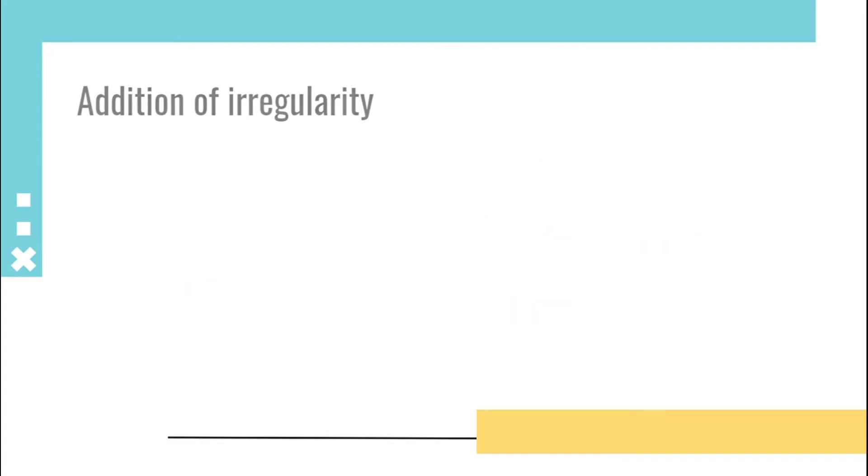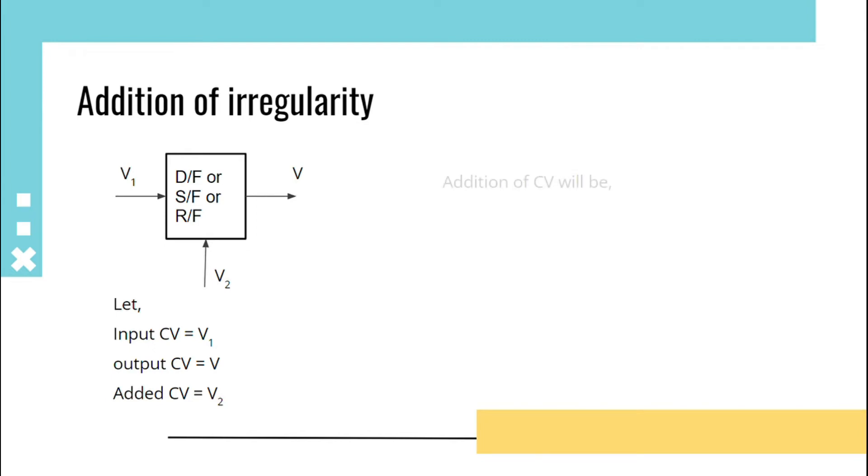Addition of irregularity: Consider a draw frame, speed frame, or ring frame where input CV is V₁, output CV is V, and added CV is V₂. Addition of CV is represented as CV output² = CV input² + CV add-on², that is V² = V₁² + V₂².